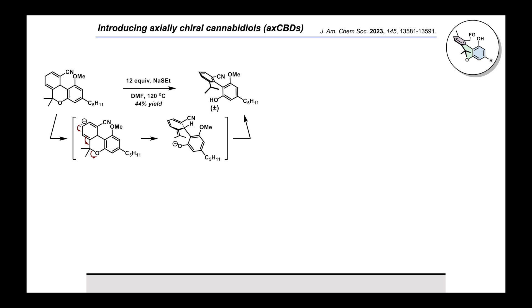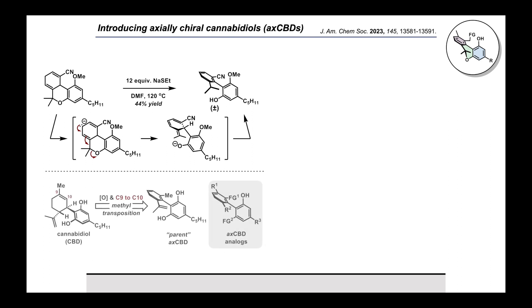During the development of the first-generation synthesis of AXCBNs, former Grenning lab member Dr. Pramali Navaratne observed a transformation that converted a Diels-Alder adduct into a biaryl with concomitant pyran ring cleavage. It was thought that this transformation occurred by an E1CB aromatization mechanism, wherein the nitrile group directs deprotonation, producing a carbanion intermediate that is poised to undergo pyran ring cleavage, yielding a phenoxide species. In situ, or upon acidic workup, a thermodynamically favorable isomerization occurs, furnishing the biaryl product. This result was compelling as it represented a novel entry into axially chiral biaryls, and the product was reminiscent of the theoretical parent axially chiral cannabidiol.